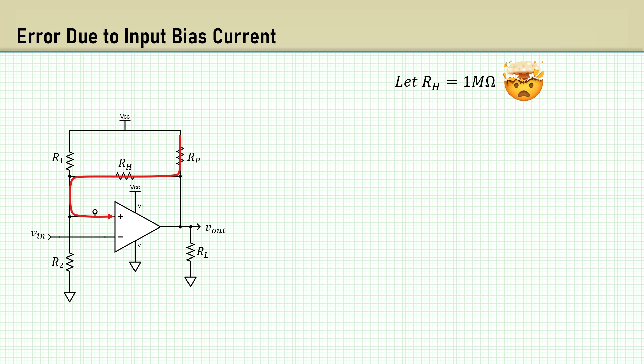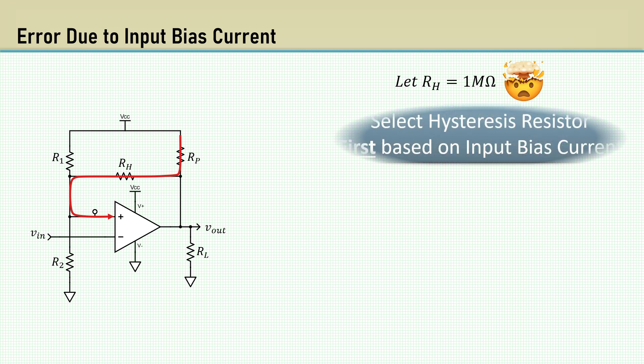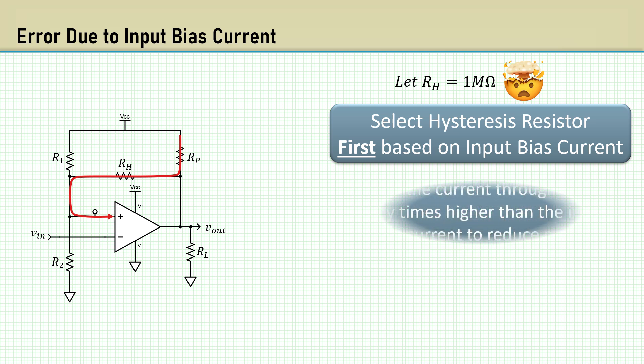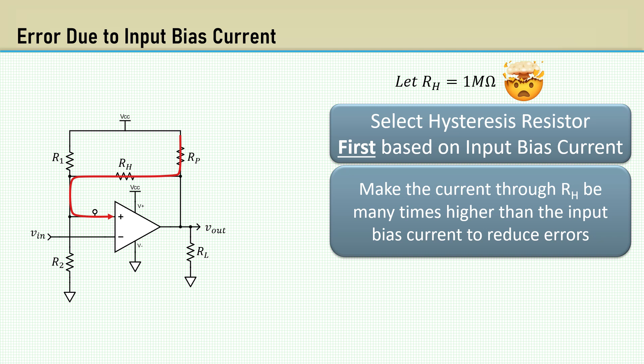The way to overcome this is to select the hysteresis resistor first based on input bias current. This can be done by making the current through RH be many times higher than the input bias current to reduce errors. Comparators have a crazy range of input bias current specs ranging from picoamps to 400 nanoamps on a LM139 at full temperature range. That's an 8,000x range in just these four comparators.